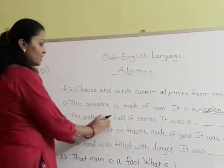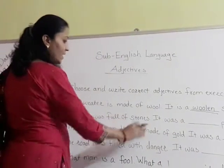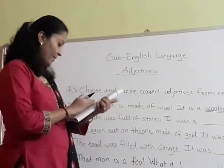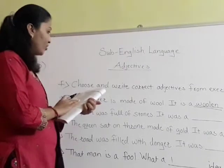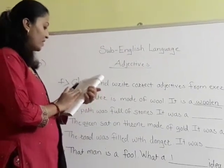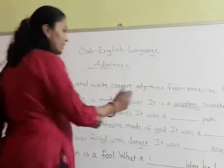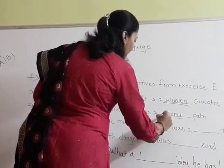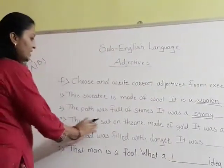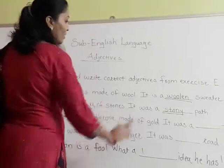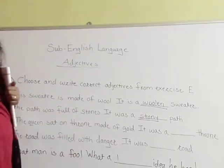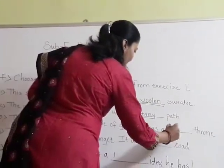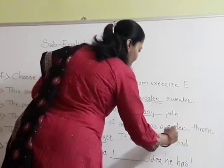Second sentence: the path was full of stones. It was a blank path. The path is full of stones, so we have to use the word 'stony'. It was a stony path — S-T-O-N-Y, stony path. Third sentence: the queen sat on a throne made of gold. It was a blank throne. Made up of gold, we can say it is a golden throne.